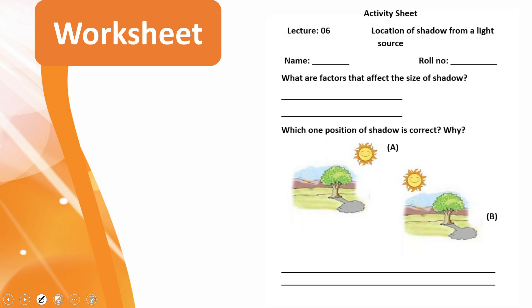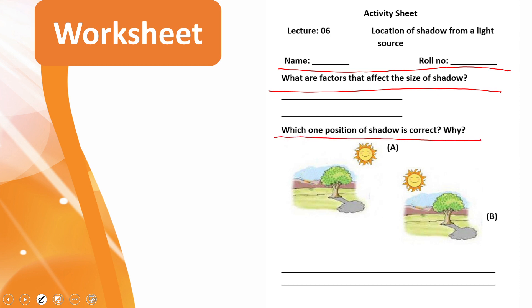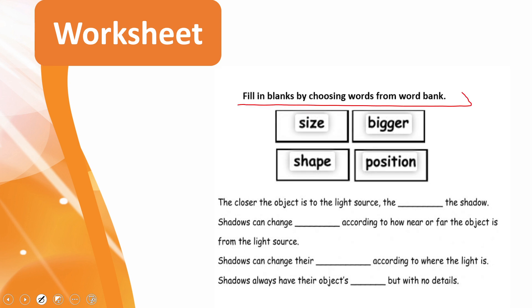Now it is time for practice. You can download the worksheet from the description box below this video, or get it in printed form from your teacher. Write your name and roll number. What are the factors that affect the size of the shadow? — Position and distance. Which position of the shadow is correct and why? The sun is here and the shadow should form on the opposite side — so picture B is the correct one, because the shadow is always on the opposite side of the light source.